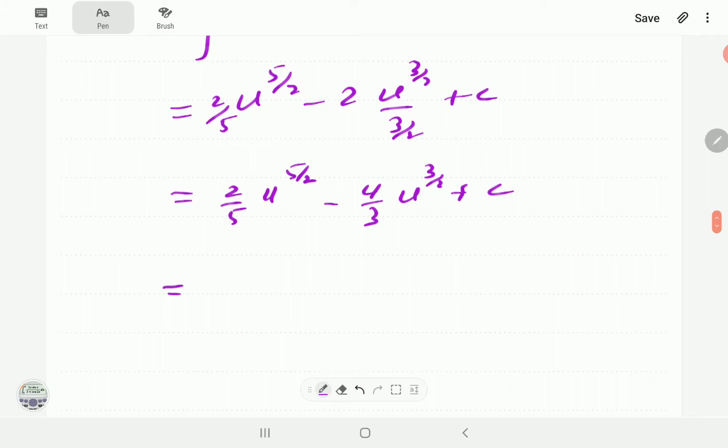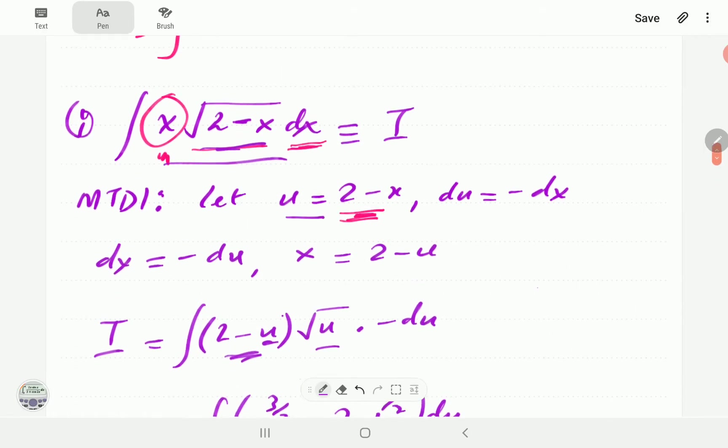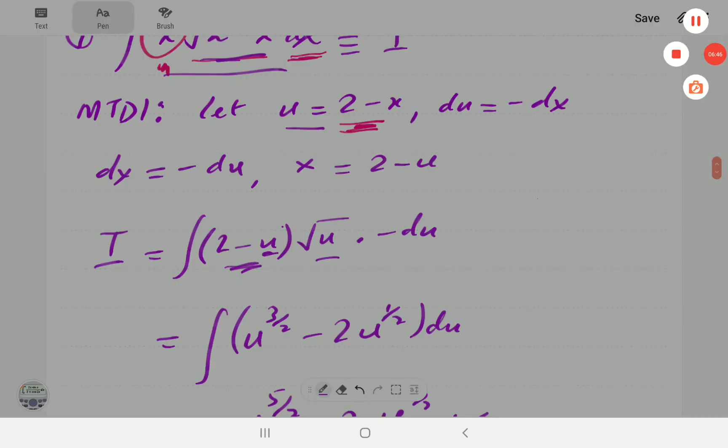Which in terms of x is going to be, remember u is 2-x, so 2/5 (2-x)^(5/2) minus 4/3 (2-x)^(3/2) plus c. And that is our integral. So that's the first method.